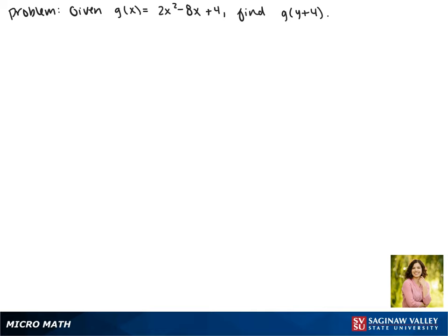Given that g(x) = 2x² - 8x + 4, find g(y+4). We'll start by plugging in y+4 everywhere we see an x.